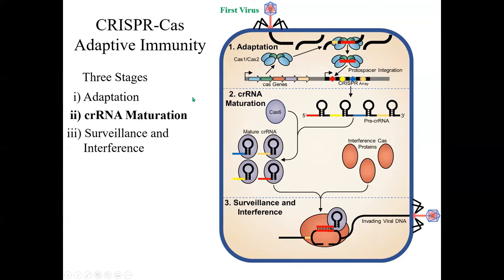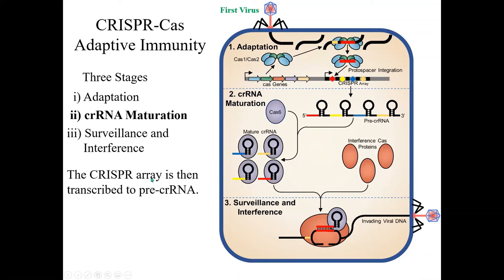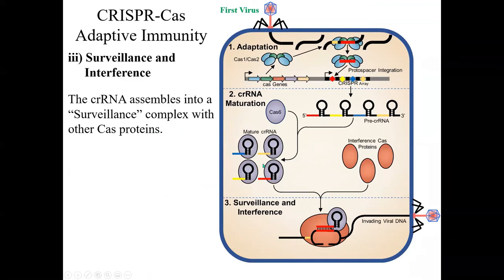In stage two, CRISPR RNA maturation, the CRISPR array is transcribed to make pre-CRISPR RNA. The repeats have palindromes in them so they form hairpins. A third Cas protein, Cas6, hops onto the repeats and cleaves them so that you wind up with small pieces called CRISPR RNA — a blue spacer with a bit of repeat, or a red spacer with a bit of repeat. These are the mature CRISPR RNAs.